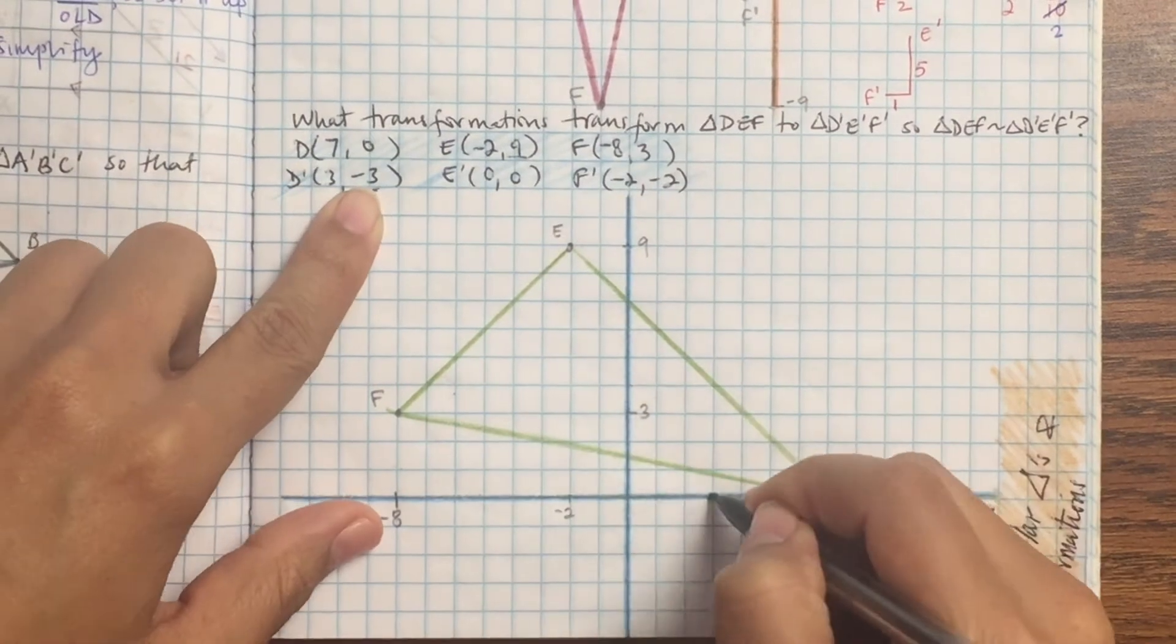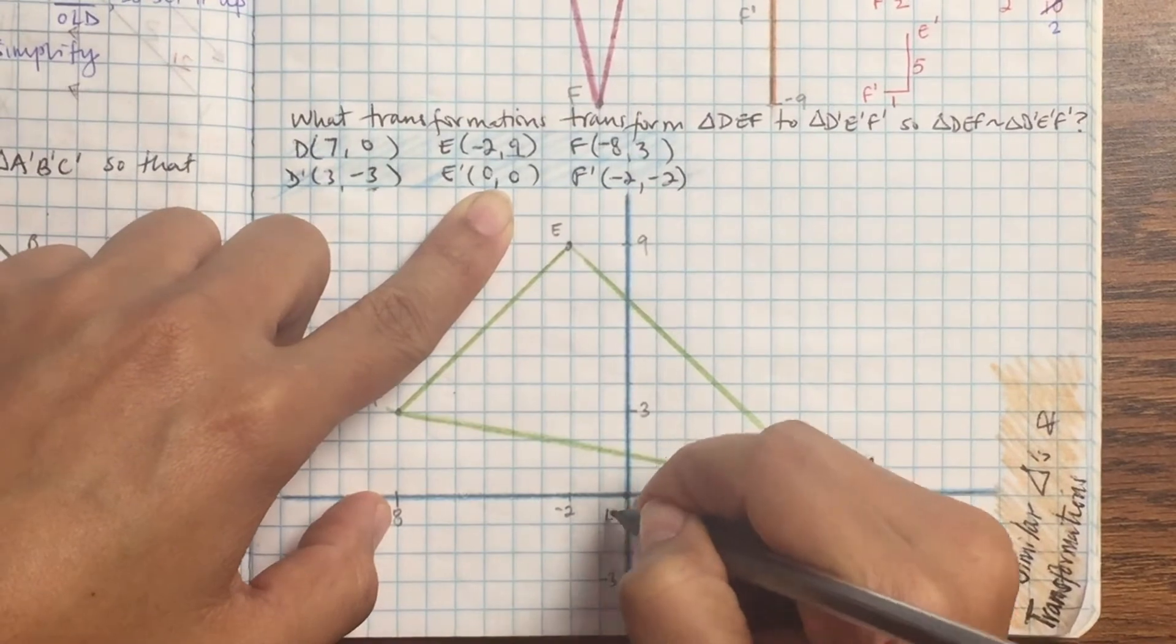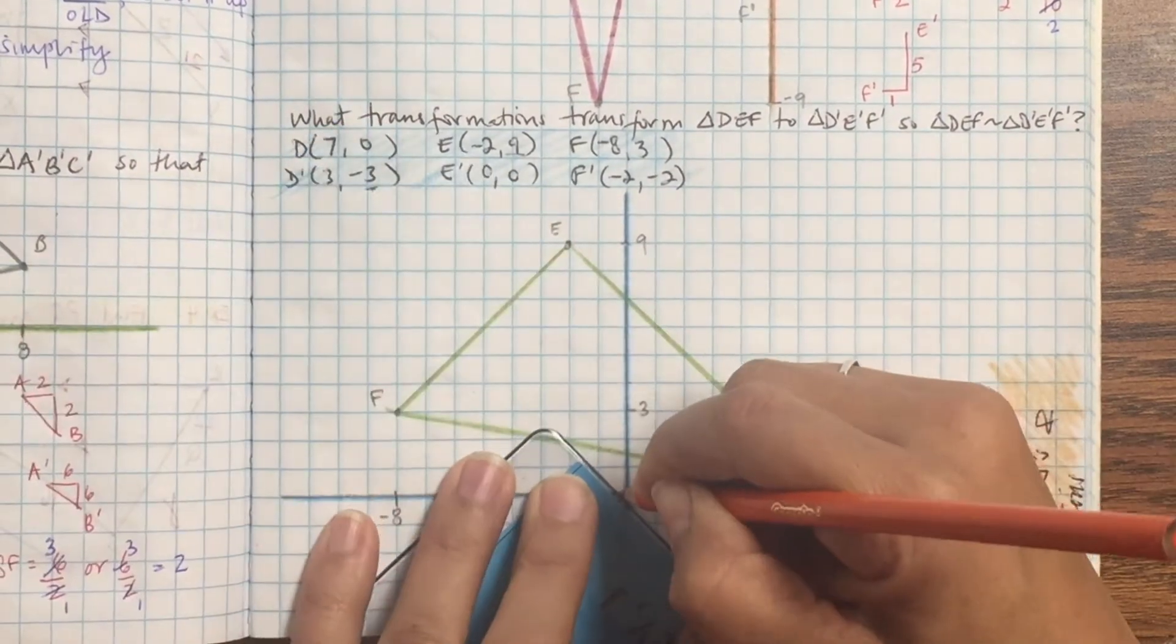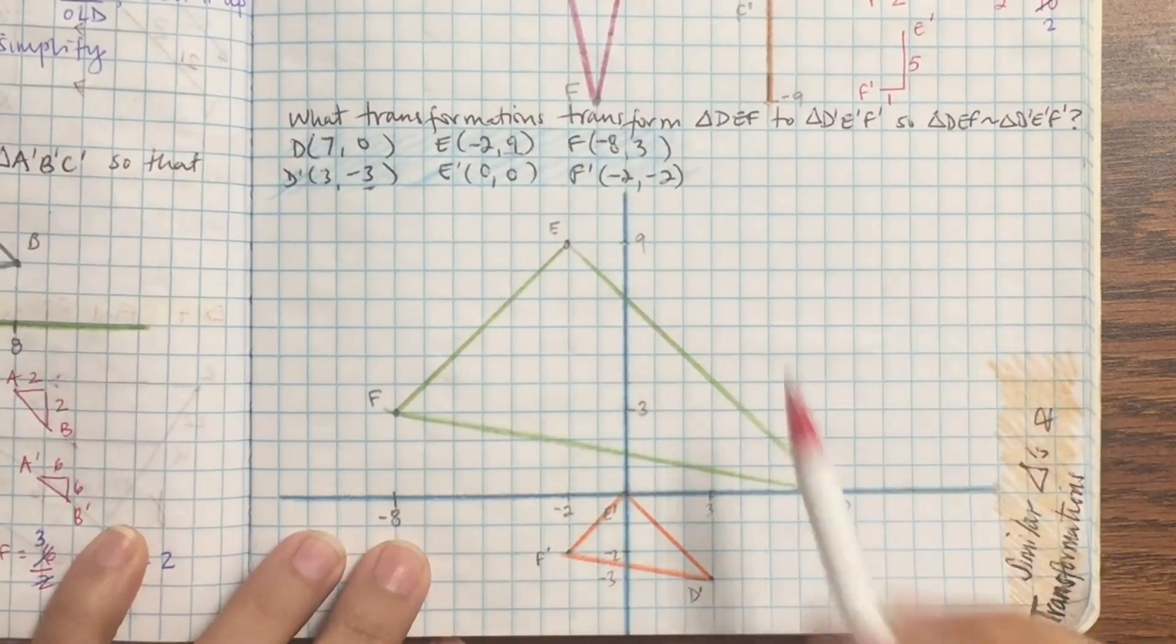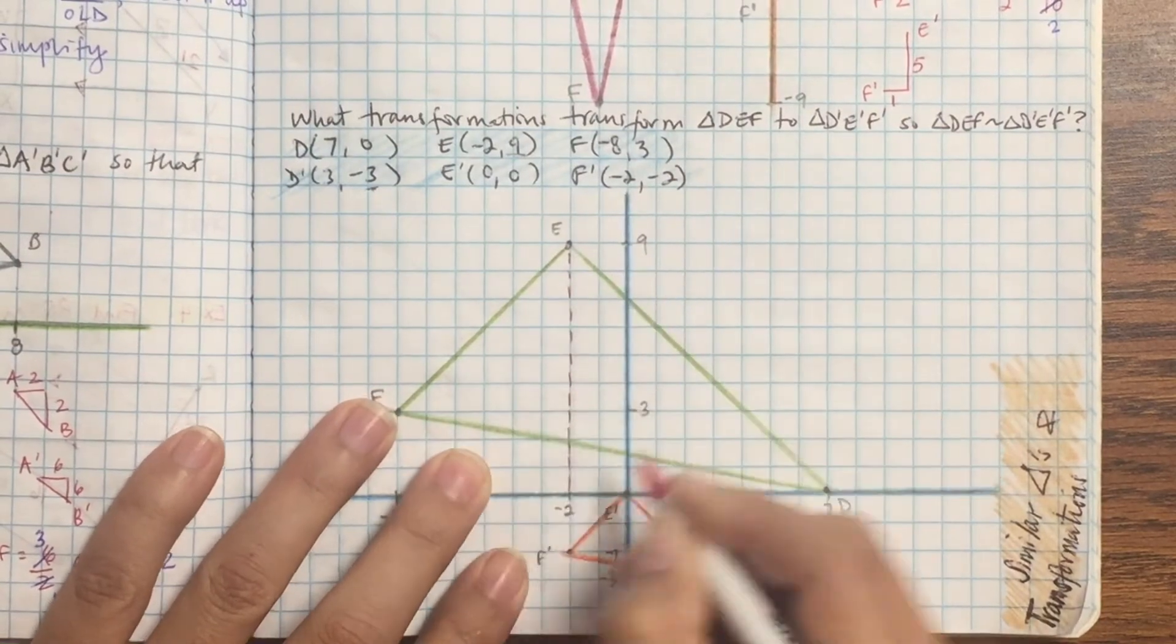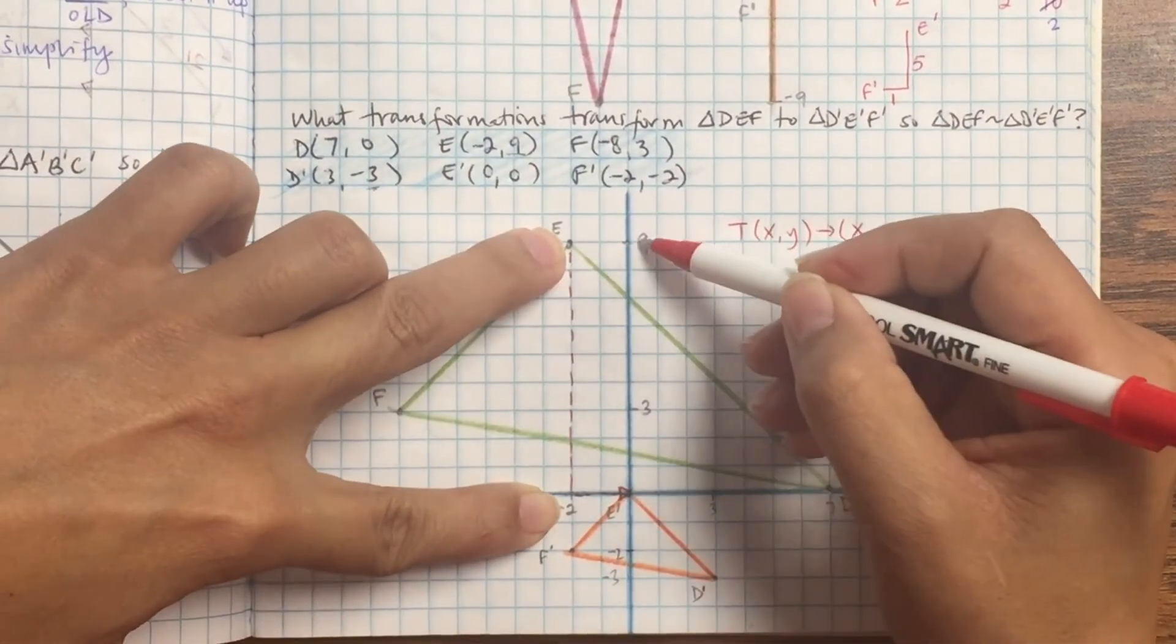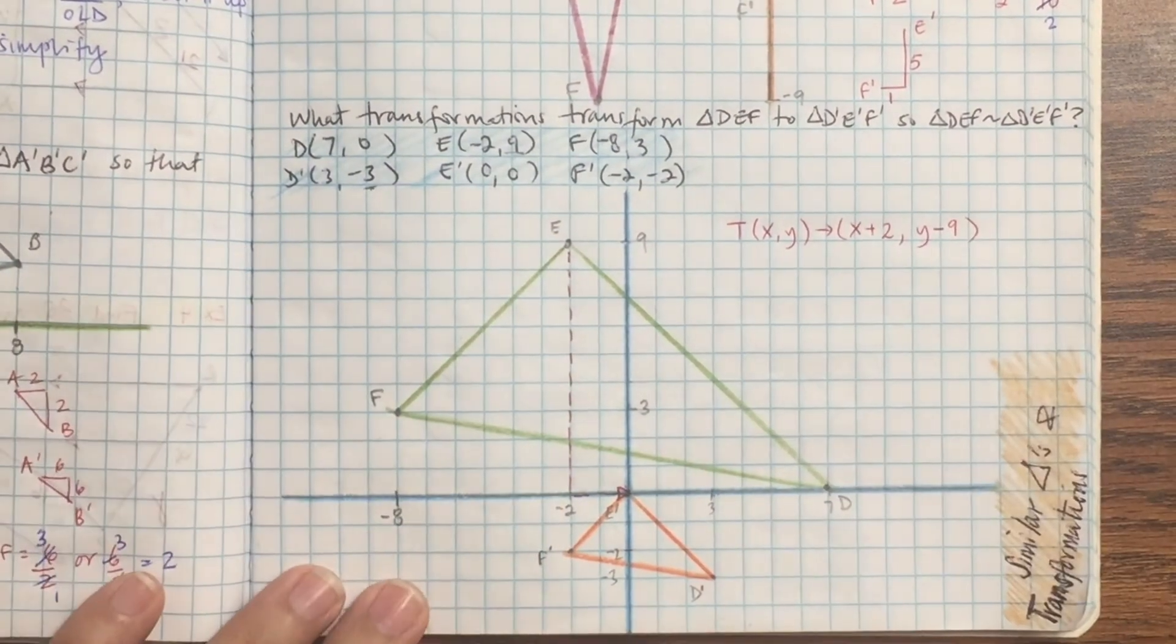My next one is going to be 3 negative 3, so that's right 3 down 3. 0, 0 is the origin. Negative 2 negative 2 is left 2 down 2. So you can see my shape got smaller, so I should expect my scale factor to be a fraction. And let's see how I translated it. How did I get from E to E prime? I'm going to go down 9 and right 2. So right 2 is plus 2 on X and down 9 is negative 9 on Y.